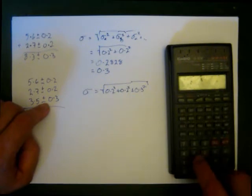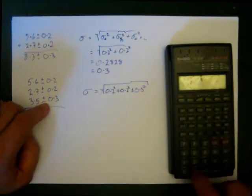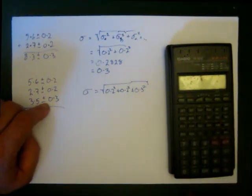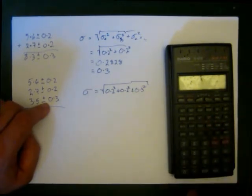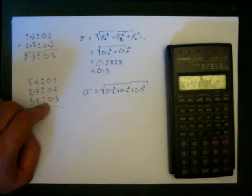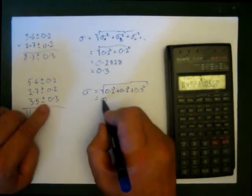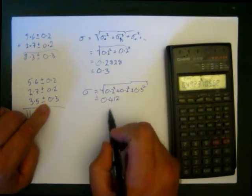So all I do is I go 0.2 squared plus 0.2 squared plus 0.3 squared, equals, take the square root of that answer, equals 0.4123.